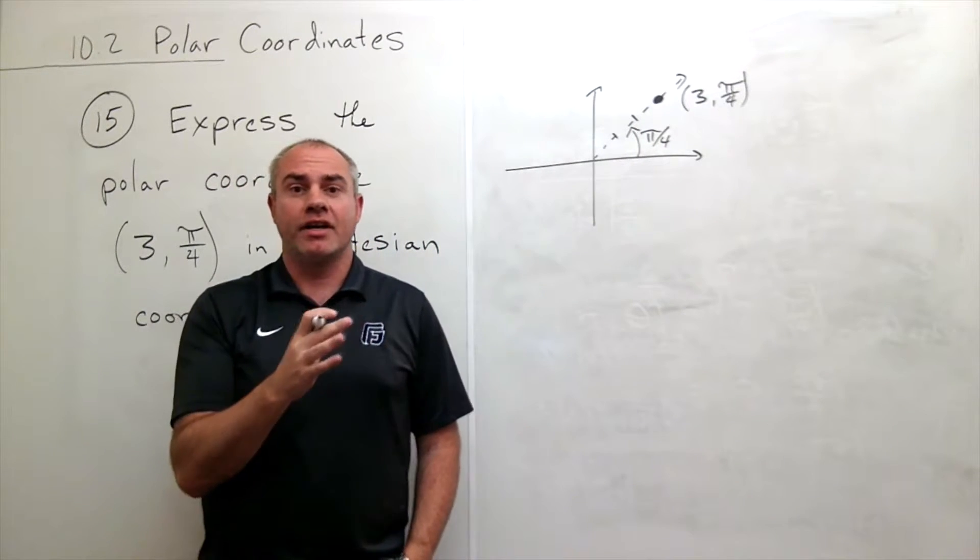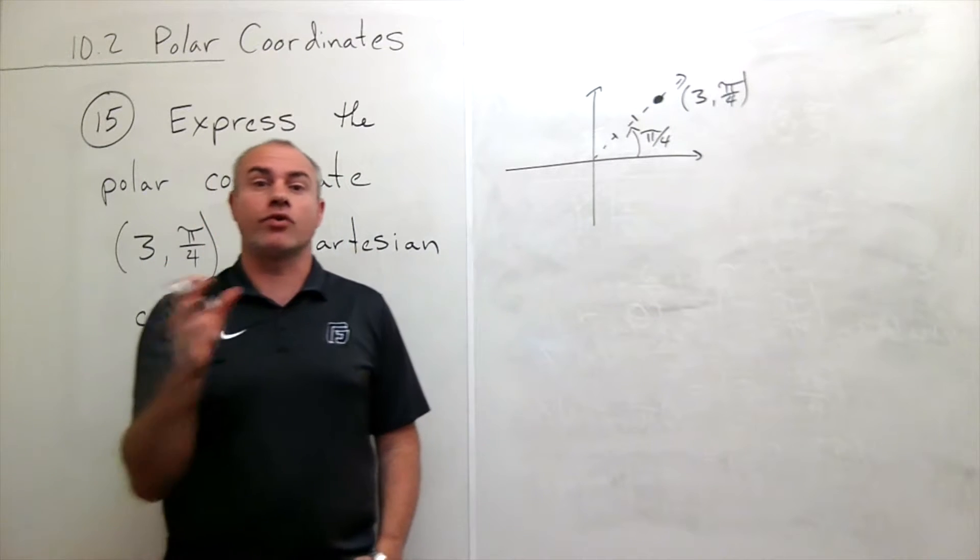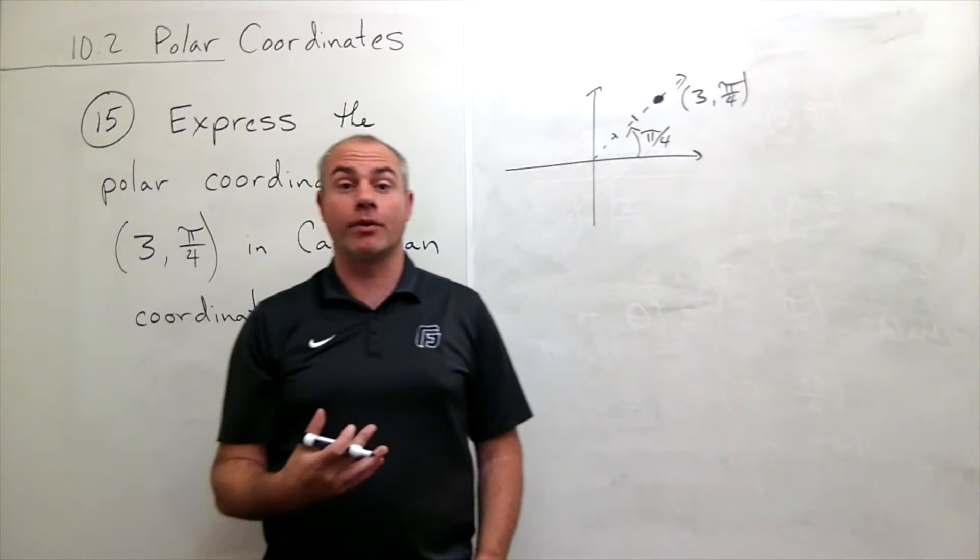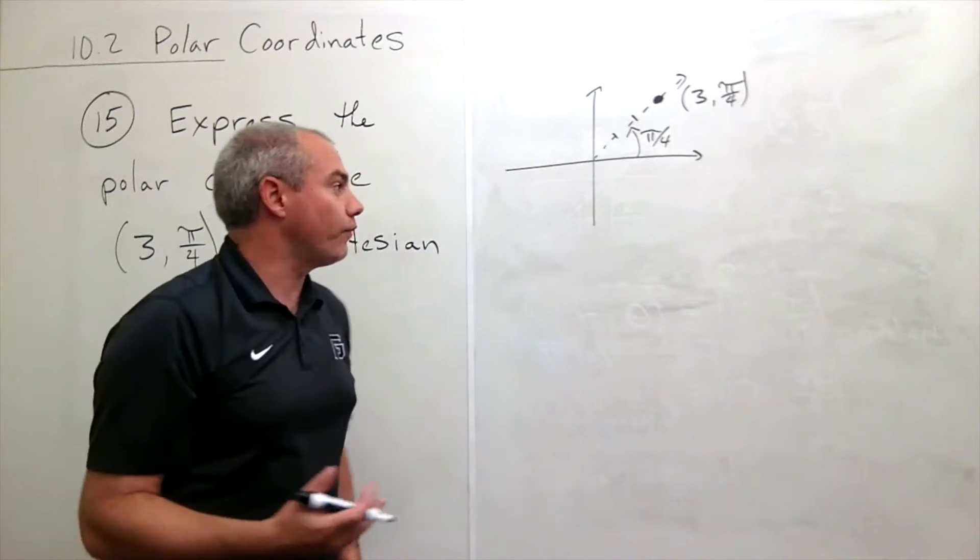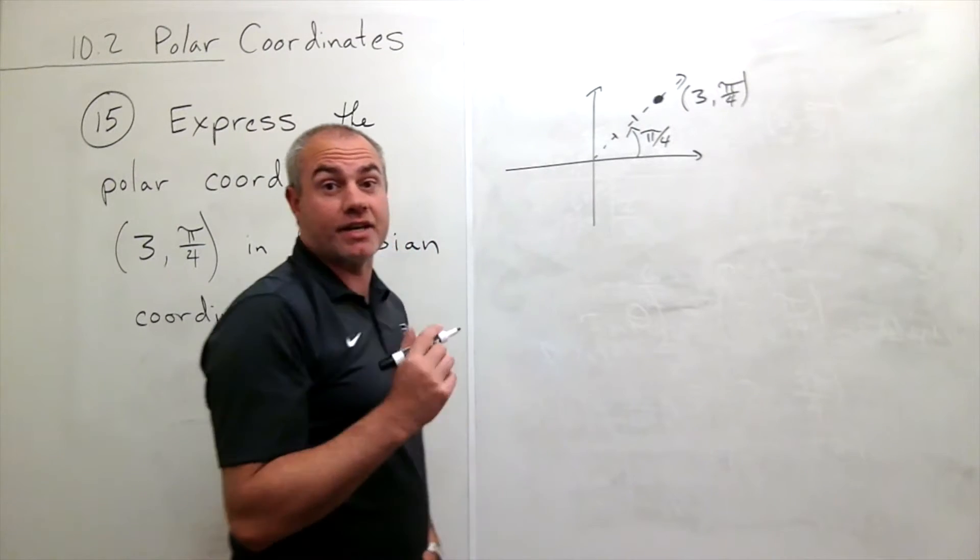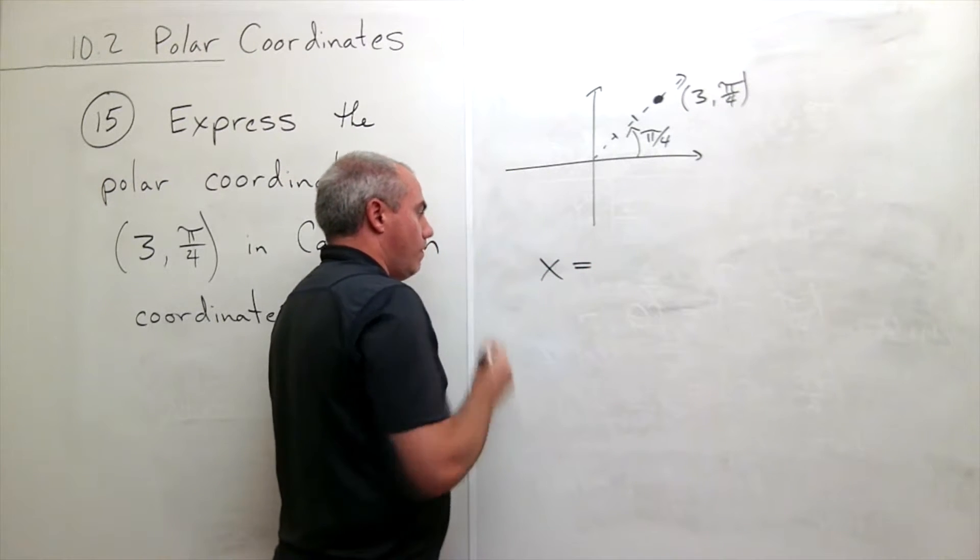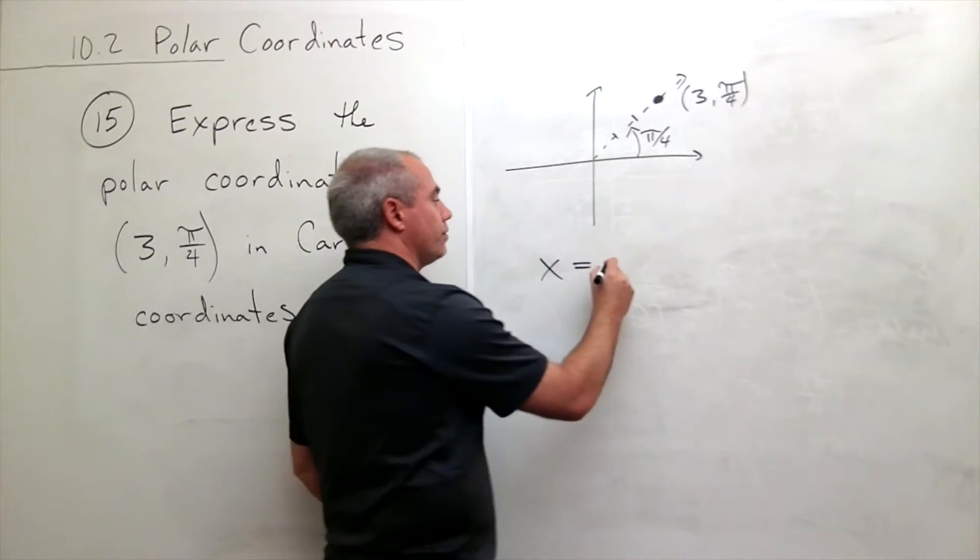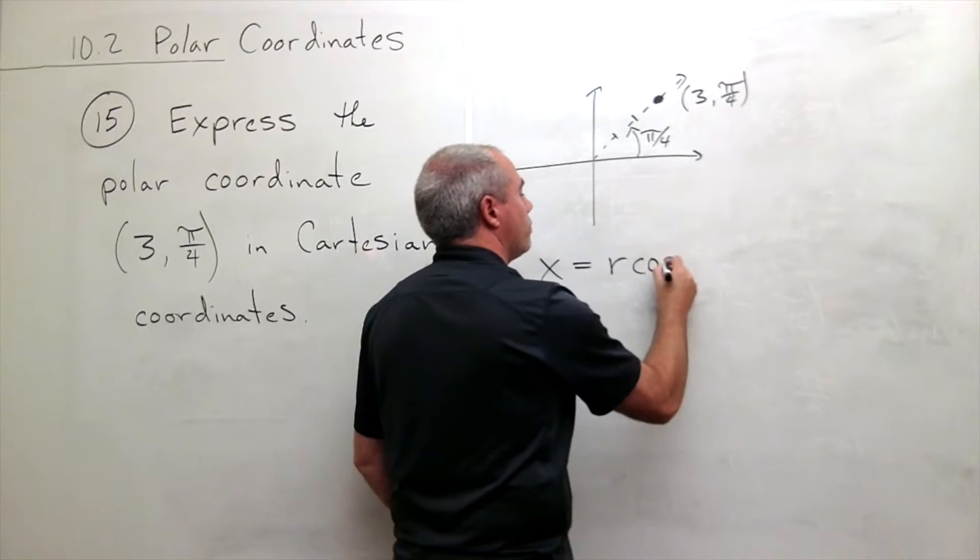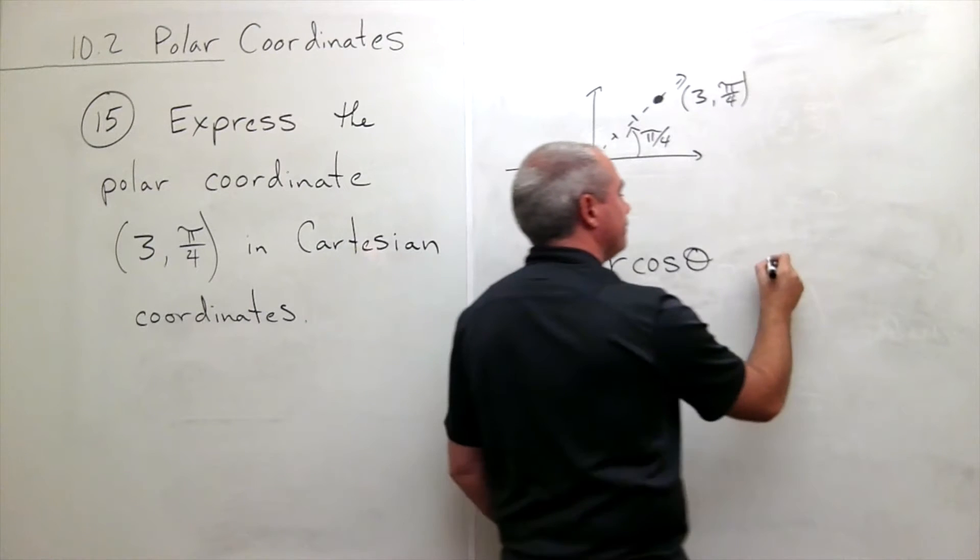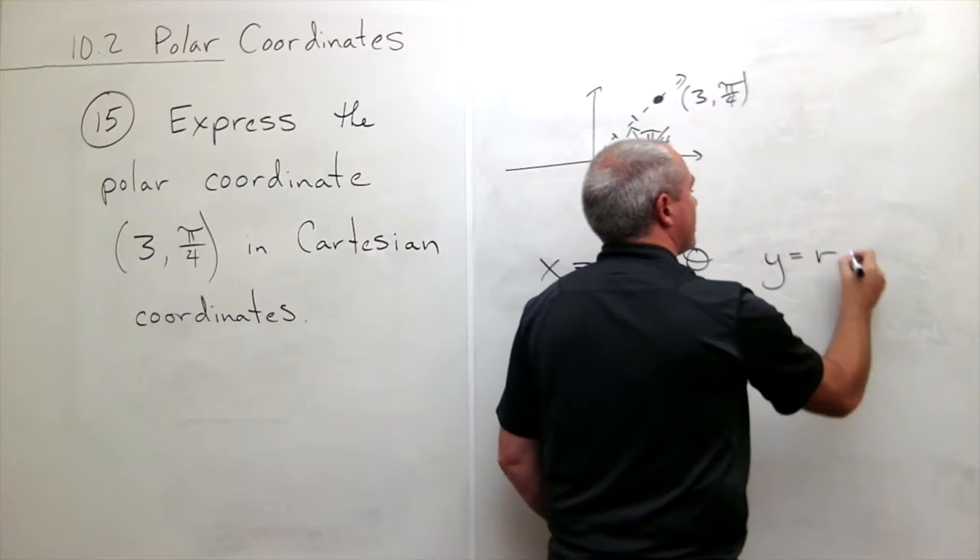Second thing I need to remember is how do I convert between Cartesian or rectangular coordinates and polar coordinates. We have some formulas that we know, and the formulas that are going to help us in this case are the following: that we know that x is equal to r cosine θ.